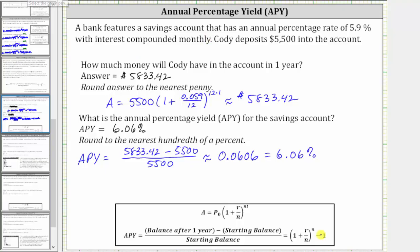But let's also determine the APY using the second formula, where the APY is equal to the quantity one plus r divided by n raised to the power of n minus one. Notice how for this formula, we don't have to use the ending balance after one year. We would have the quantity one plus r divided by n is 0.059 divided by 12. Again, n is 12 because we have interest compounded monthly. This is raised to the power of n, which is 12, and then minus one.